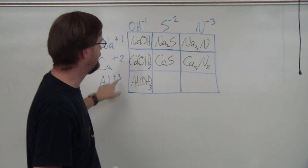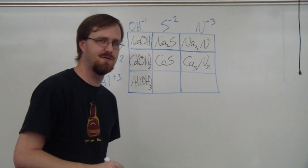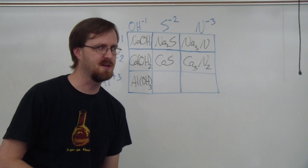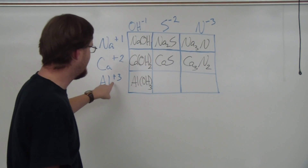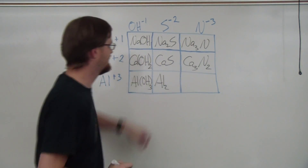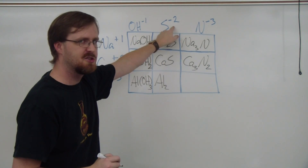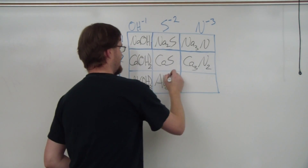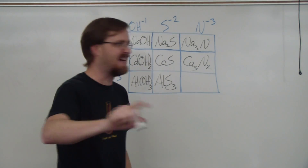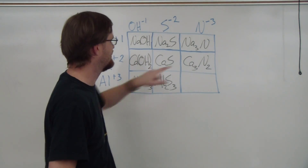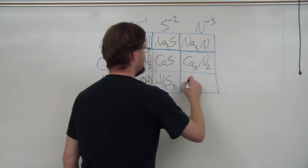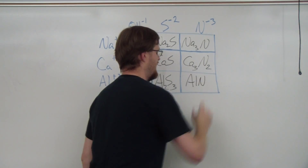Next up is aluminum plus three and sulfur minus two. So again, two and a three — our lowest common multiple is six. So I need two aluminums to make that a positive six, and I need three sulfurs to make that a negative six. That is Al2S3. Last but not least: aluminum plus three and nitrogen negative three — they already add up to zero, so we just need one of each. AlN.